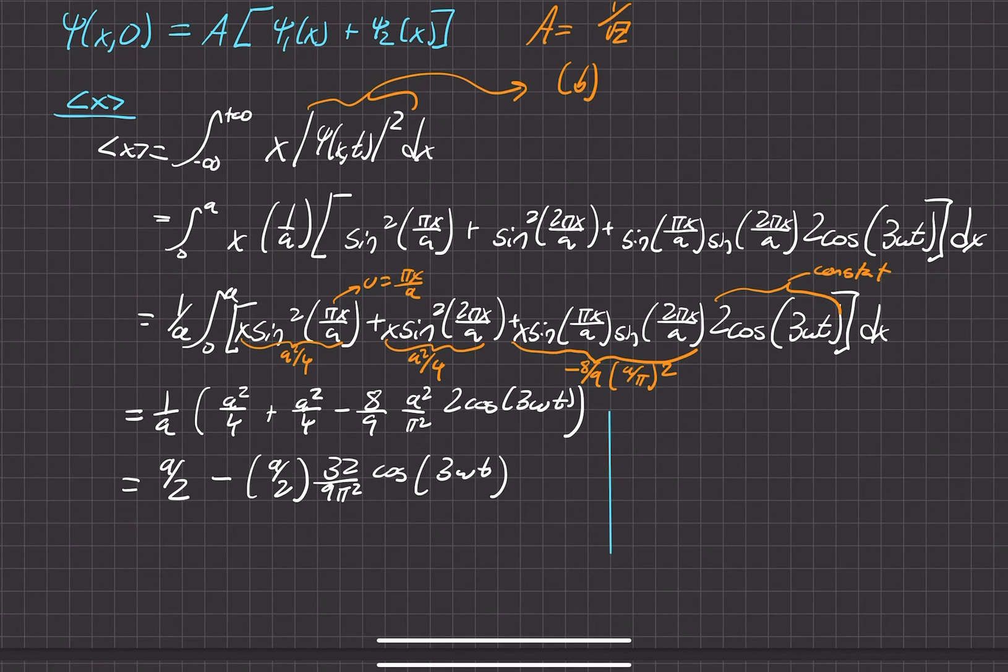So if we just draw the infinite square well real quick here. So here's our walls where these potentials go up to infinity. Right. And this is our x and this is a. Right. So a over 2 is right there in the middle. Right. And so what this expectation value is actually telling us is that it's some value centered around a over 2.